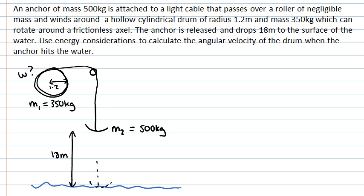Now we're given a hint here to use energy considerations. So let's think about what's happening. At the start, before the anchor is released, the system is stationary and the anchor has gravitational potential energy as it's above the surface. So the system starts with gravitational potential energy.